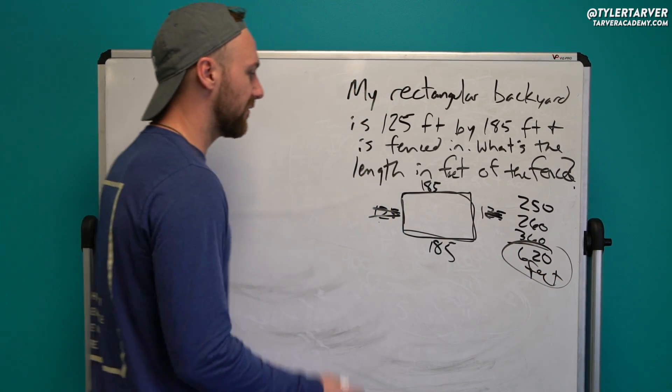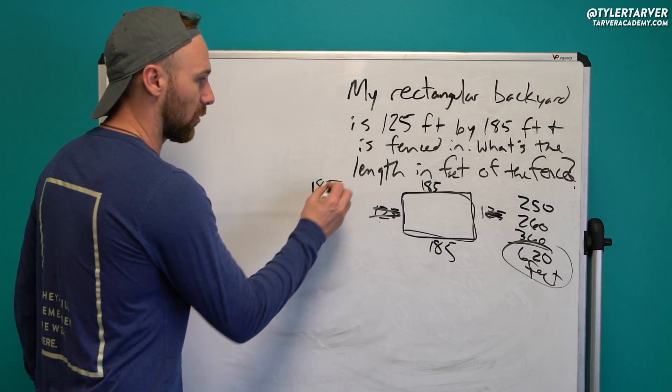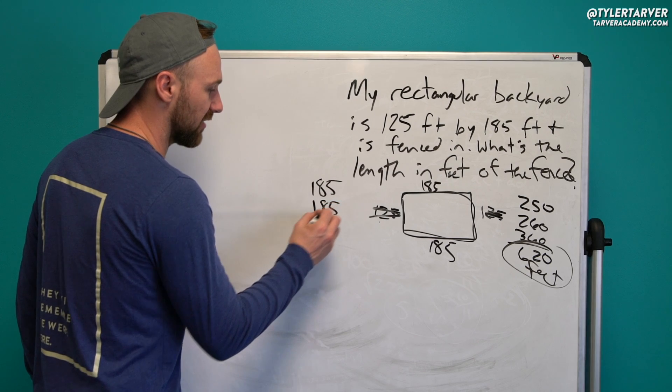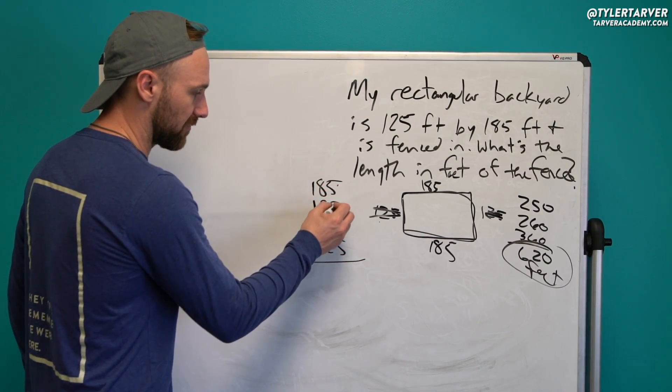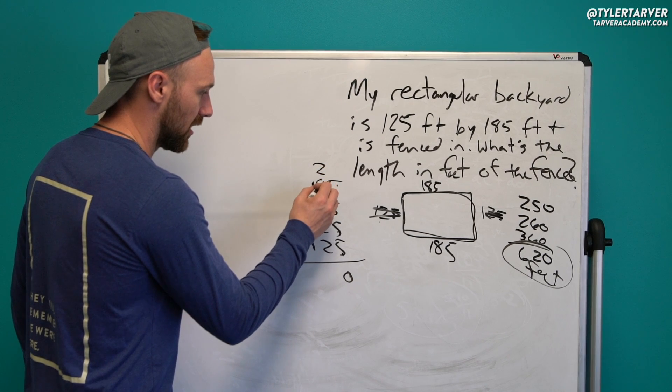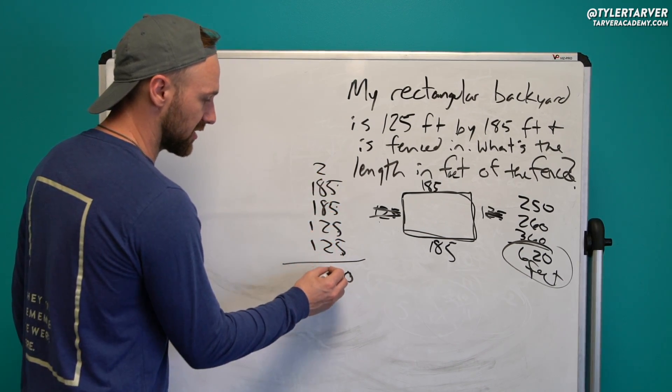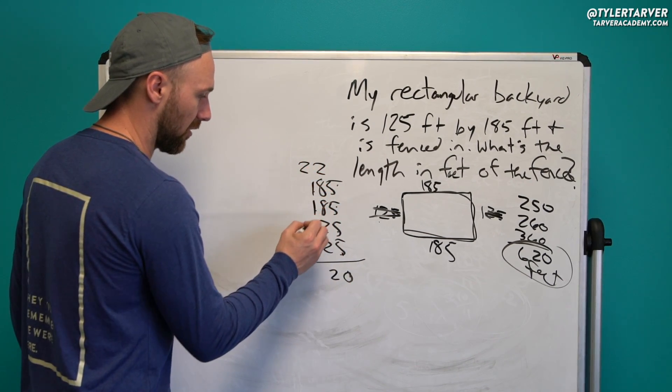Now, multiple ways to do that. If you wanted to, you could have just done 185 plus 185 plus 125 plus 125 and then added them up. That's 20. That's 10, 18, 20, 22, 2, 3, 4, 5, 6.